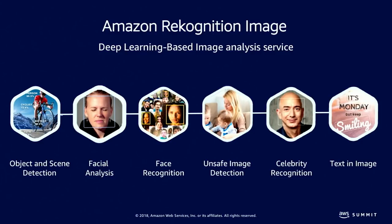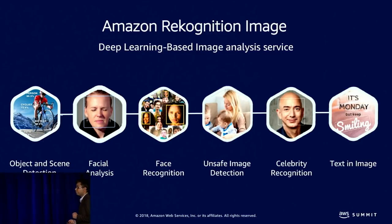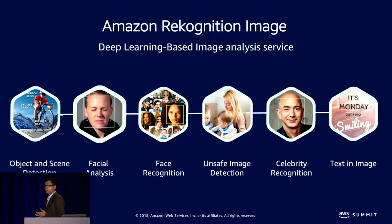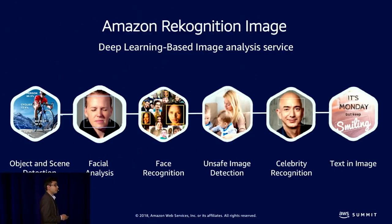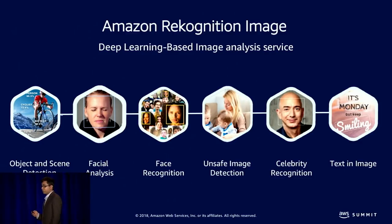Then in 2017, we added unsafe image detection — if your image has nudity or suggestive content, this helps you filter it automatically. We also launched celebrity recognition, where we've trained a model with hundreds of thousands of popular figures in sports, politics, and media. Give it an image and it'll find people and recognize if they're a celebrity. Finally, in November last year, we launched Text in Image, which is our text detection and recognition service for real-world text.